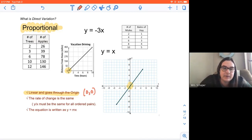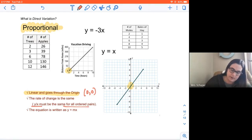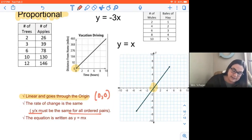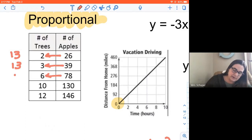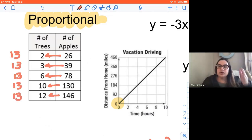If a t-table is proportional, your y divided by your x must be the same for all ordered pairs, so let's take a look. Is 26, what is 26 divided by 2? That's 13. 39 divided by 3 is 13. 78 divided by 6 is 13. 130 divided by 10 is 13. 146 divided by 12 is 13. So your y divided by your x has to give you the same answer every time for a t-table to be proportional.